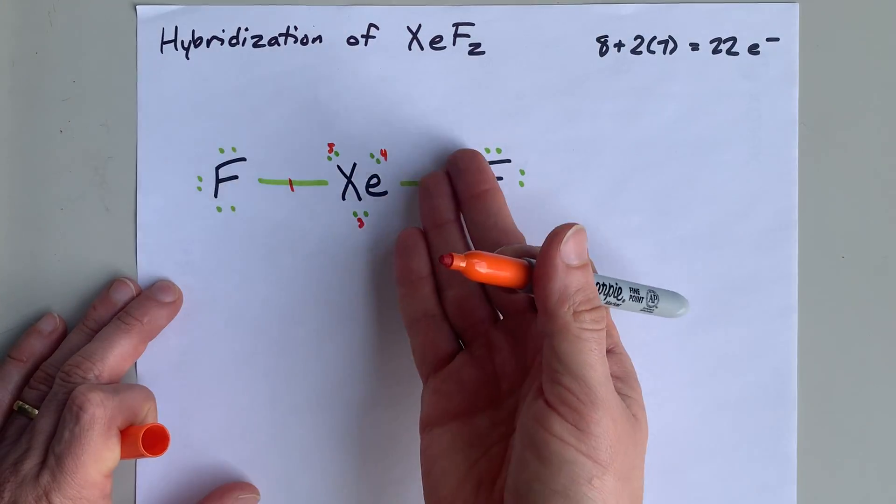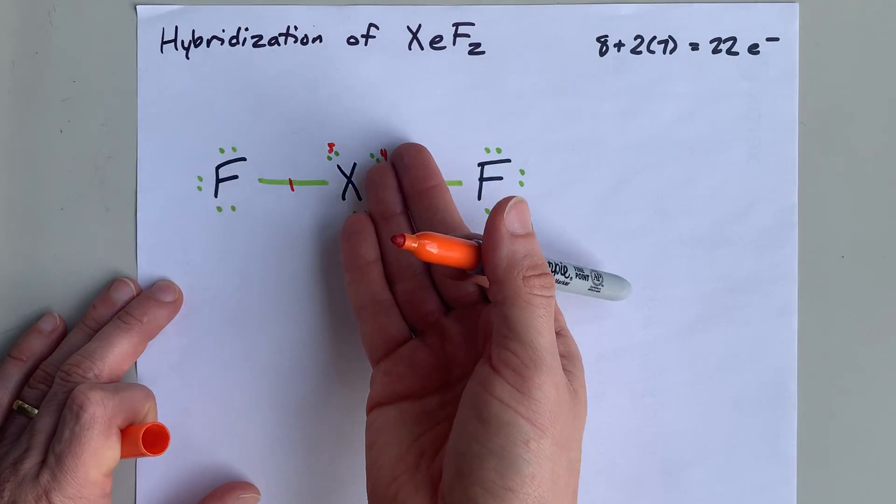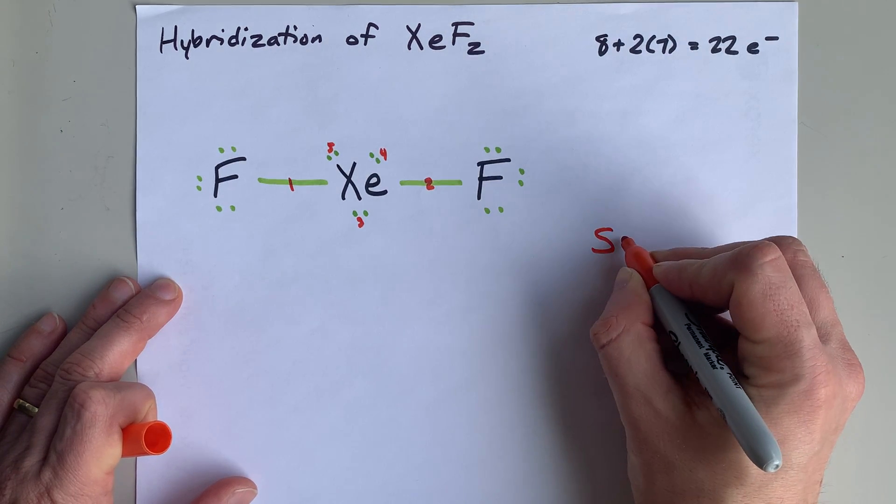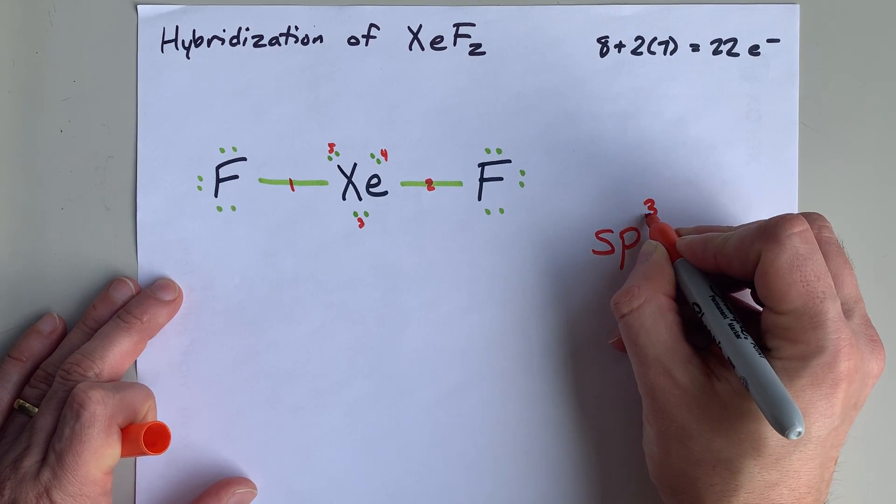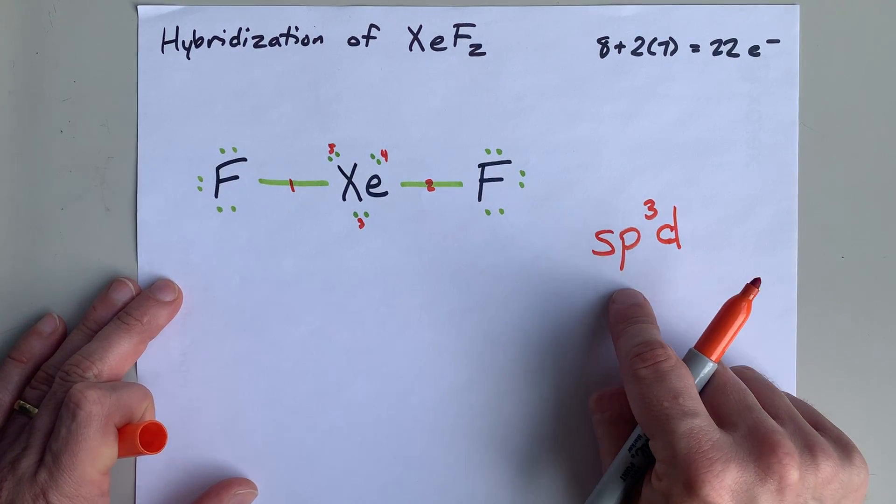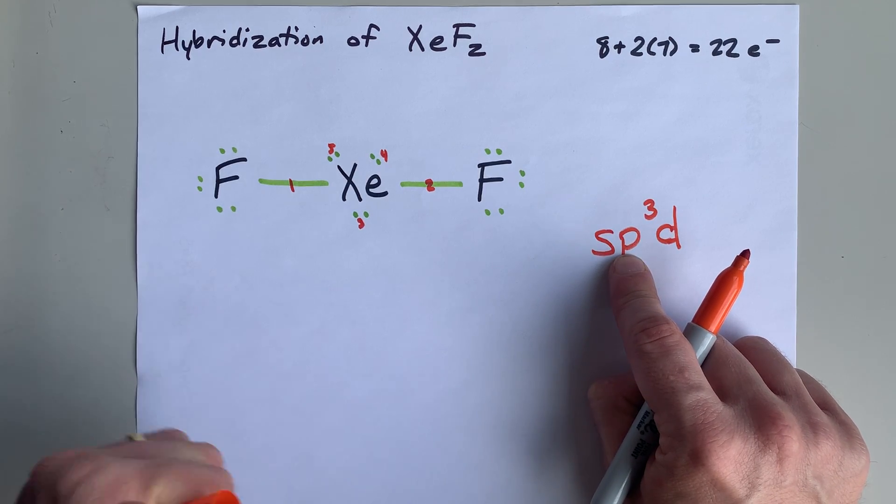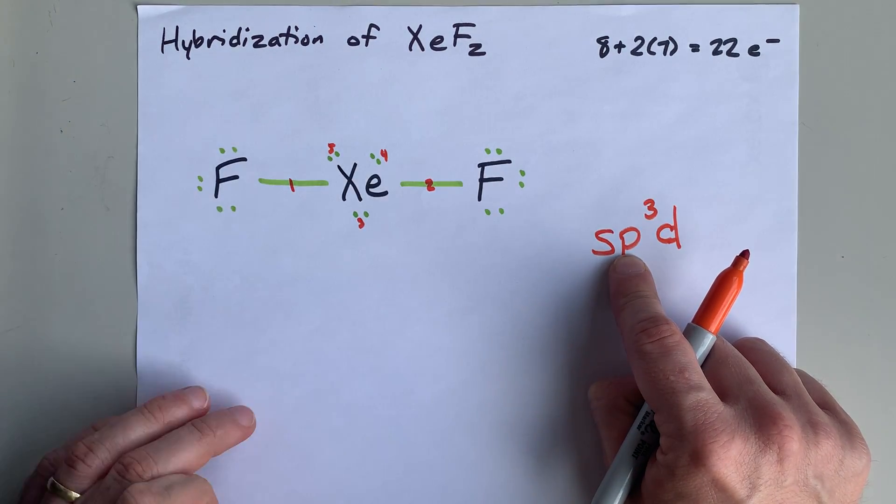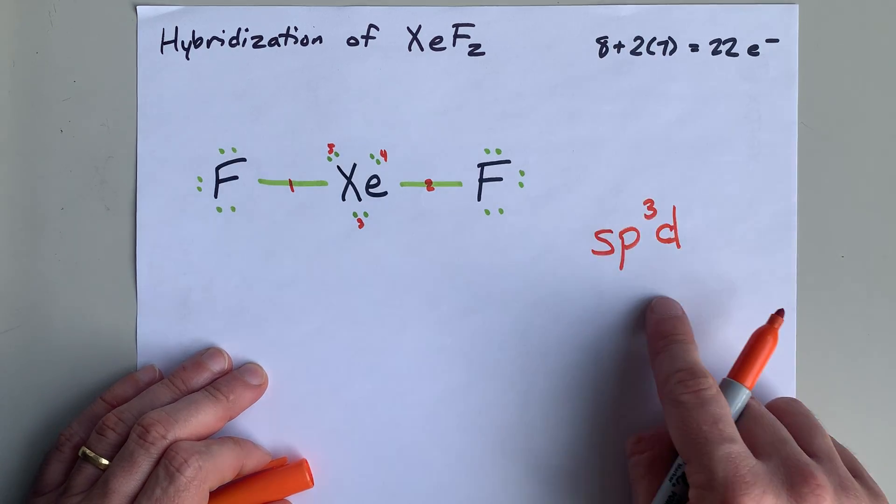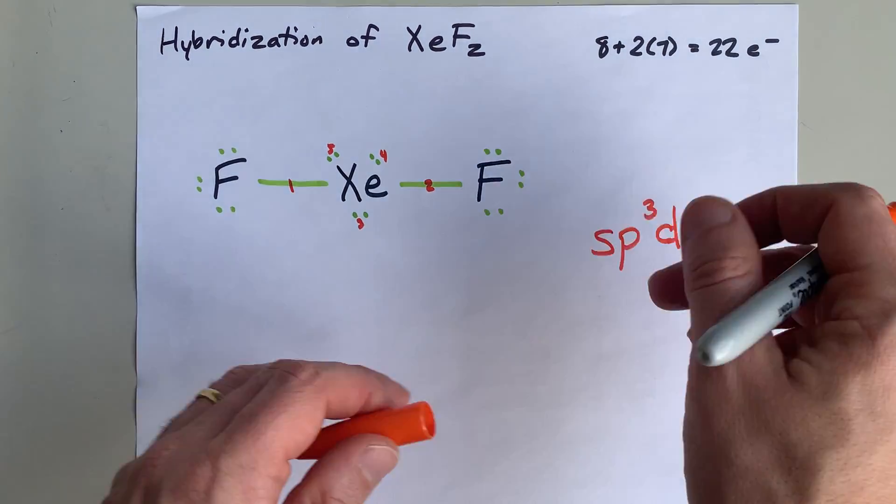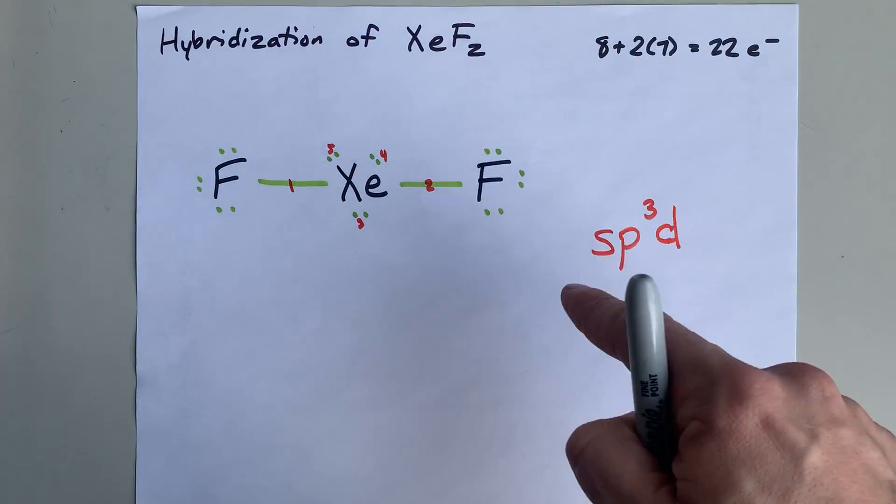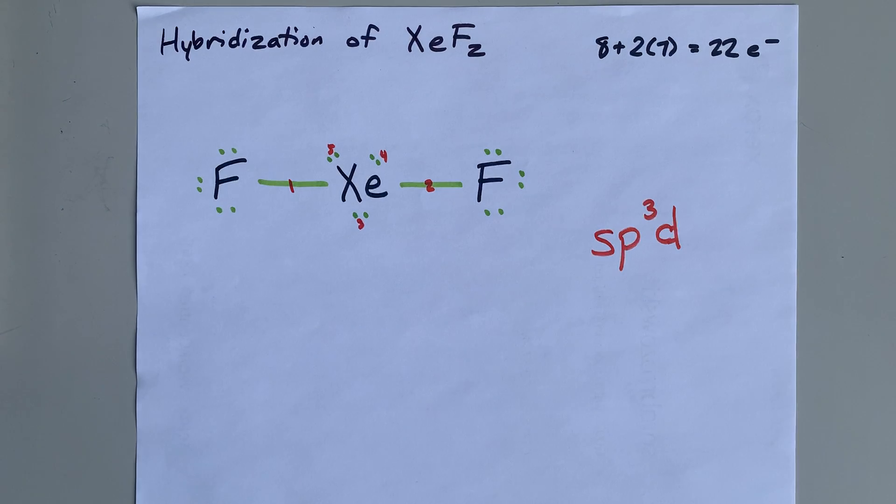When you are in need of 5 hybridized orbitals, the hybridization is SP3D. Because you're going to use the S orbital and the 3P orbitals, PX, PY, PZ, and 1 of the D orbitals in that energy level. They will hybridize together, create 5 degenerate hybridized orbitals at some energy in between S and D.